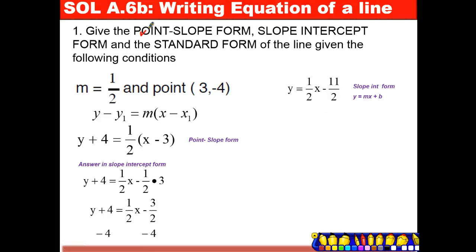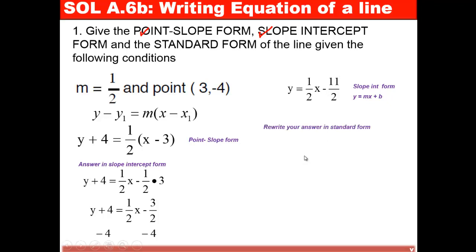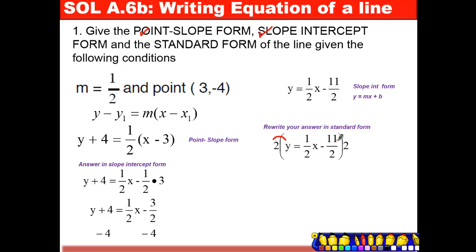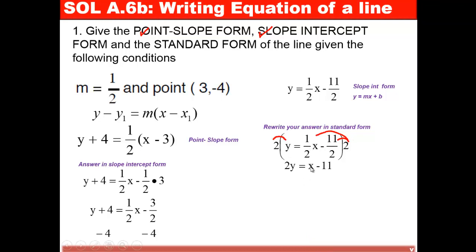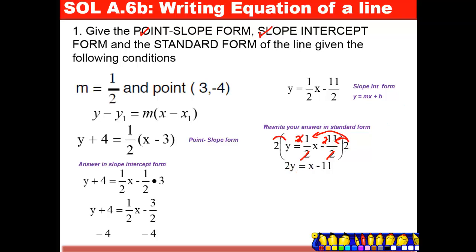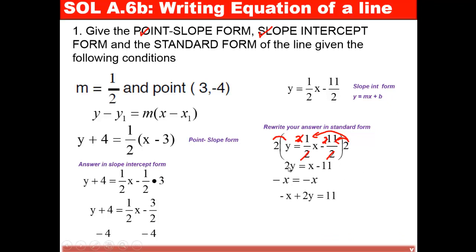Now let's write this into standard form. We multiply both sides by 2, distributing 2 to each term. We get 2y on the left, and x minus 11 on the right — since 2 times 1/2 cancels to x, and 2 times negative 11/2 gives negative 11. We need x and y together, so we subtract x on both sides, giving negative x plus 2y equals negative 11.